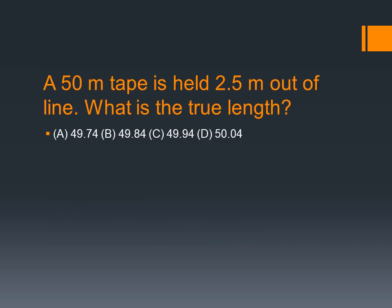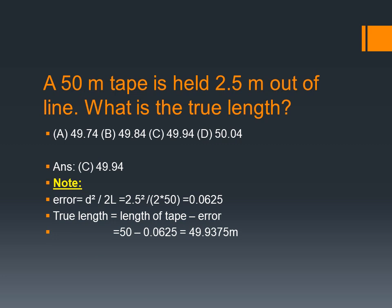Next question: a 50m tape is held 2.5m out of line. The correction is applied and the result is 50 minus 0.0625, which gives 49.9375, approximately 49.94m.